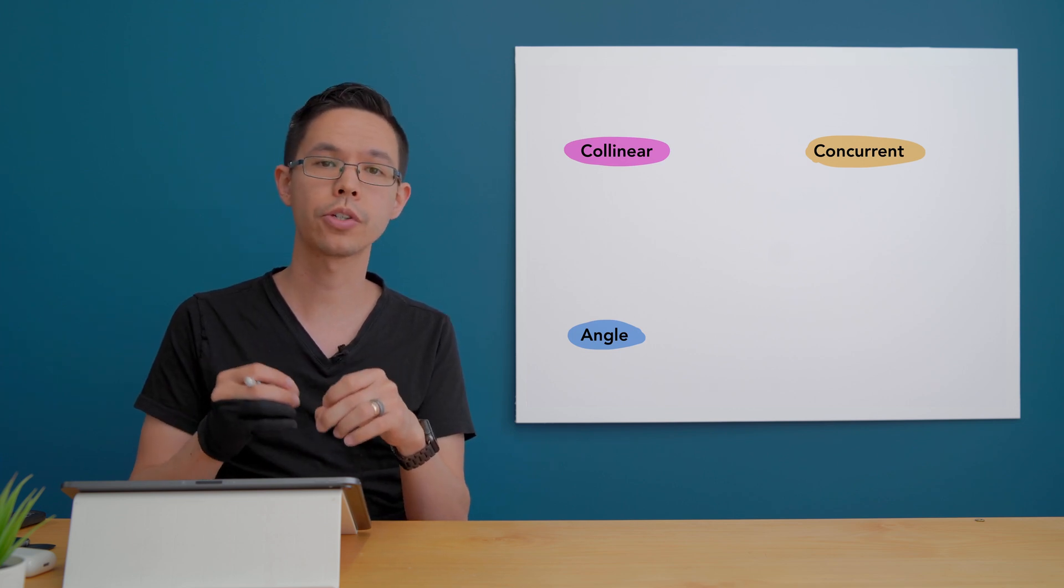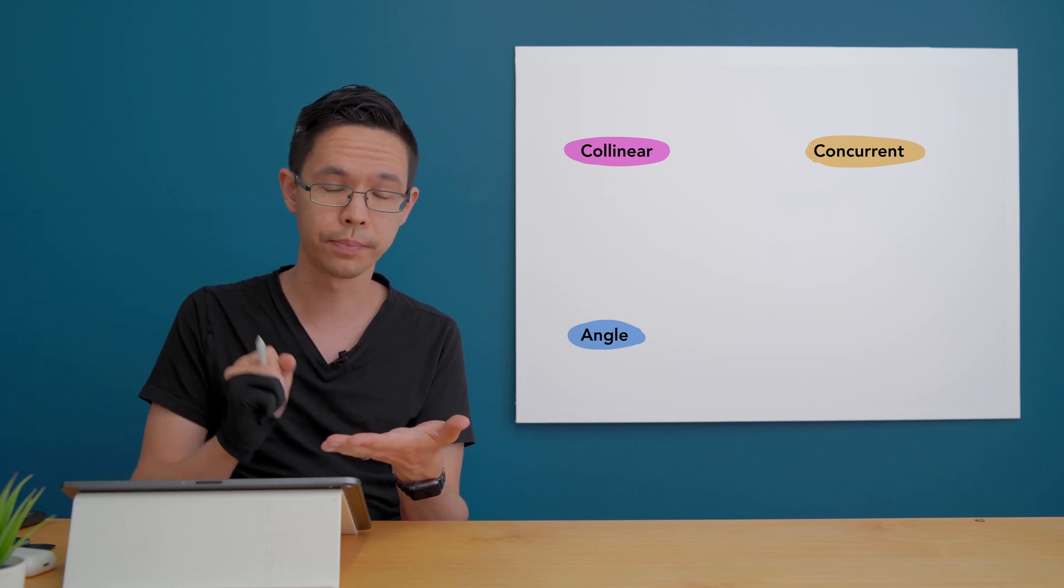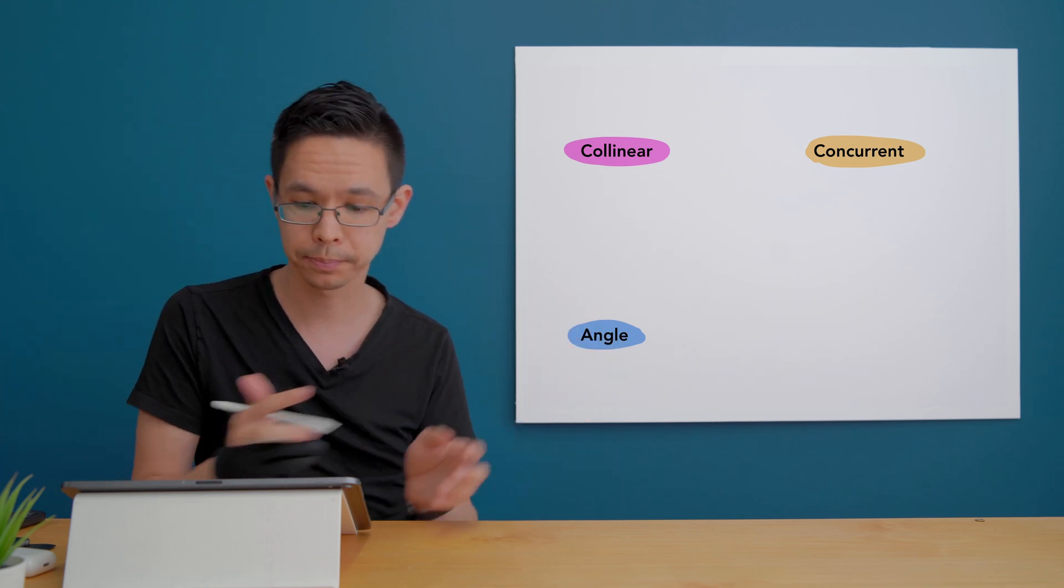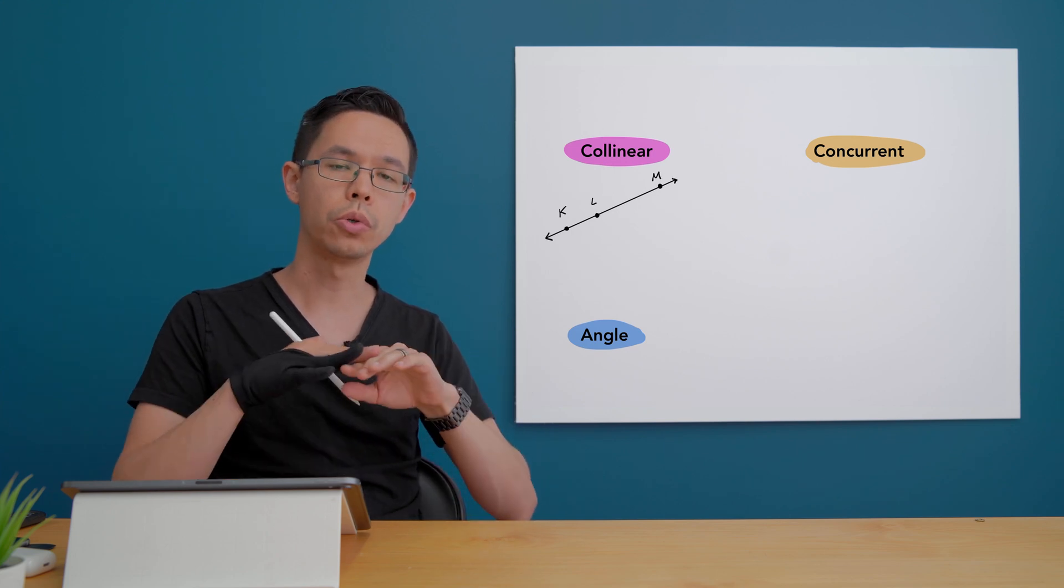Collinear is usually referring to points. Points that are all lying on the same straight line. So I'll quickly draw a picture of that. We can say the points K, L and M are all collinear.